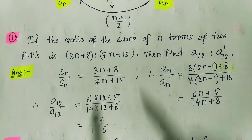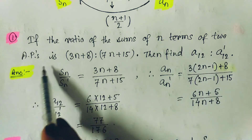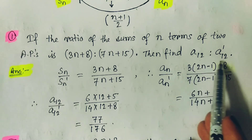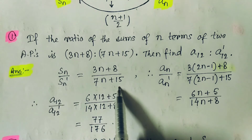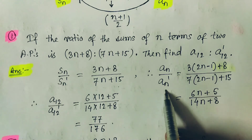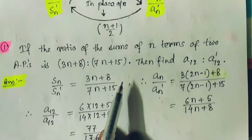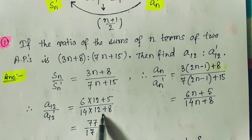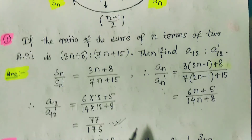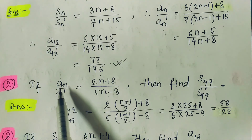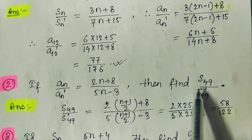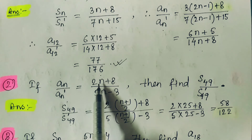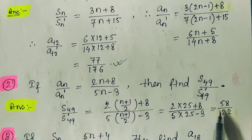For example, if the ratio of sums of n terms of two APs is (3n plus 8) to (7n plus 15), find A12 to A12'. Since Sn ratio is given and we want the nth term ratio, replace n by 2n minus 1. Then substitute n equals 12 to find the required ratio A12 to A12'. Similarly, if the ratio of nth terms is given and we need S49 to S49', replace n by (n plus 1) divided by 2 to get the ratio 58 to 22.